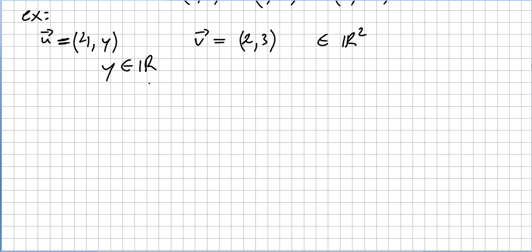And v is the vector (2,3). Now the question is, can we write the vector u as a linear combination of vector v?